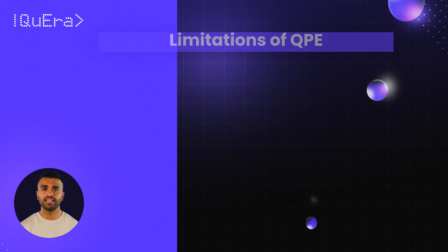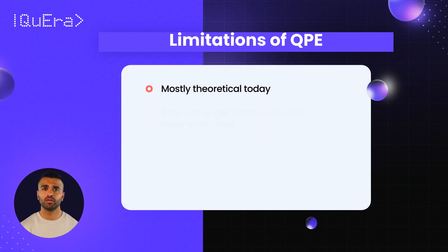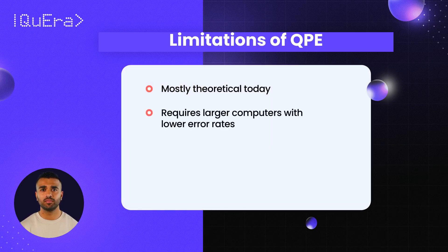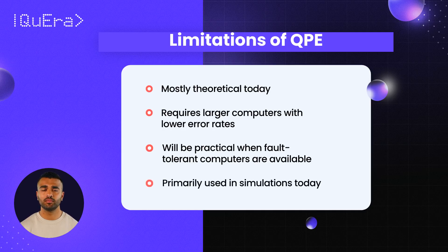While QPE is powerful, it's still mostly theoretical because it requires quantum computers to be much more stable and error-free than they are today. This is why QPE is considered a future algorithm — one that will shine when we have more advanced, fault-tolerant quantum computers. For now, scientists mostly experiment with QPE using computer simulations.